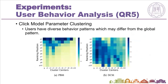The fifth research question is: can personalized click models infer users' different behavior patterns? We visualize the behavior-related parameters of one position-based model, PBM, and one cascade model, DCM, to show the different behavior patterns among users. From the experimental results, we find that by analyzing the parameters of personalized click models, we can observe that users have diverse behavior patterns which may differ from the global pattern. Thus, it is important to personalize user behavior modeling in web search.